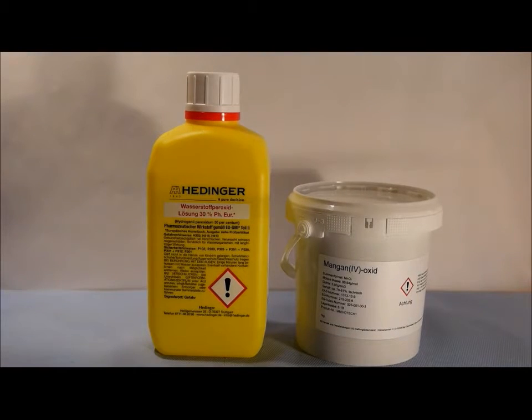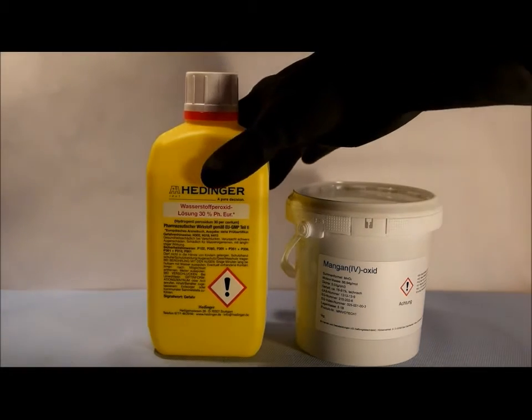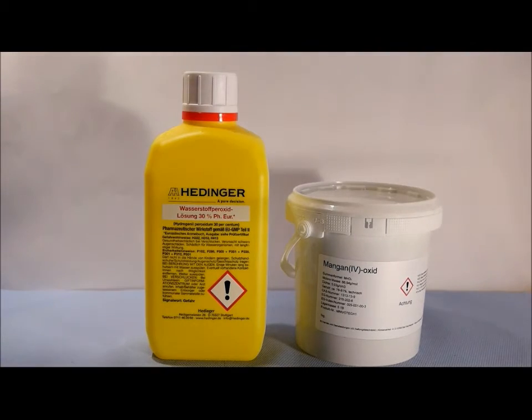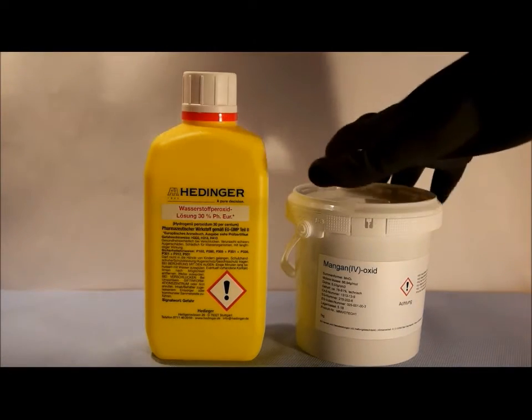Today I'll show you how to produce oxygen by reaction of hydrogen peroxide and manganese dioxide. This hydrogen peroxide has around 30%, but a lower concentration like 3% will work too.